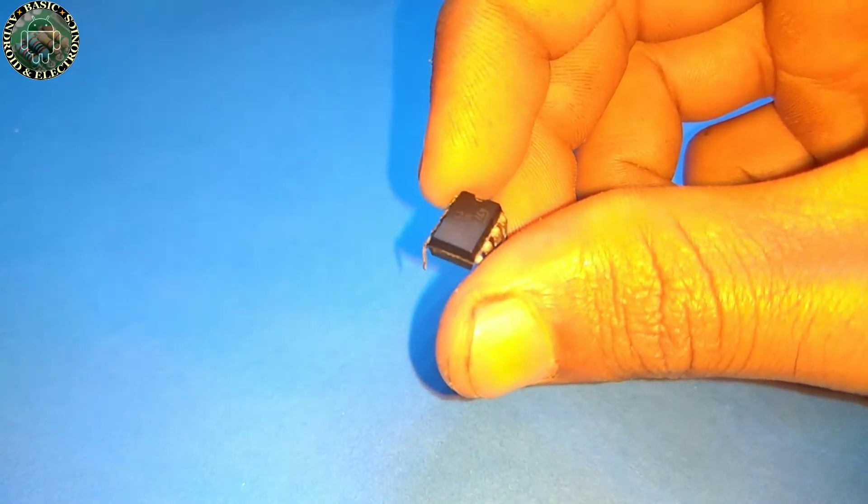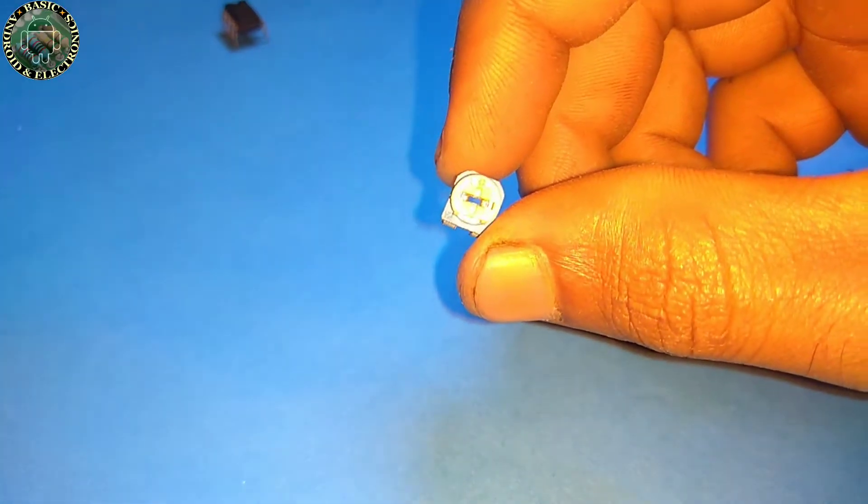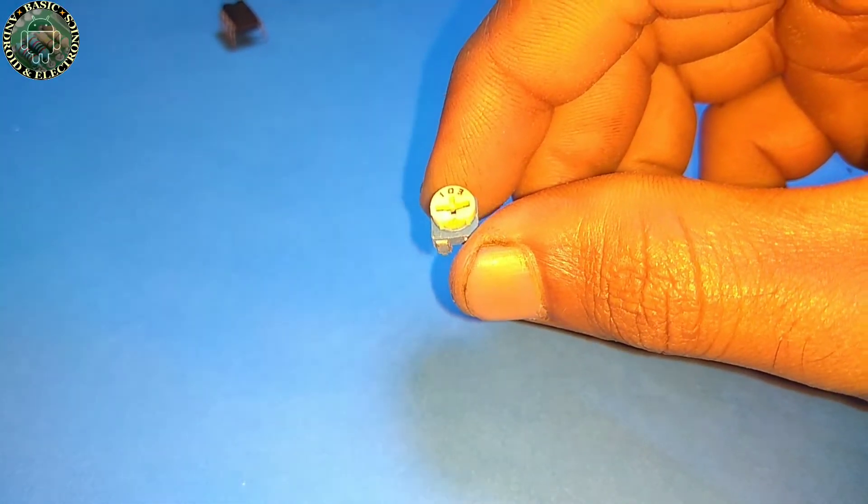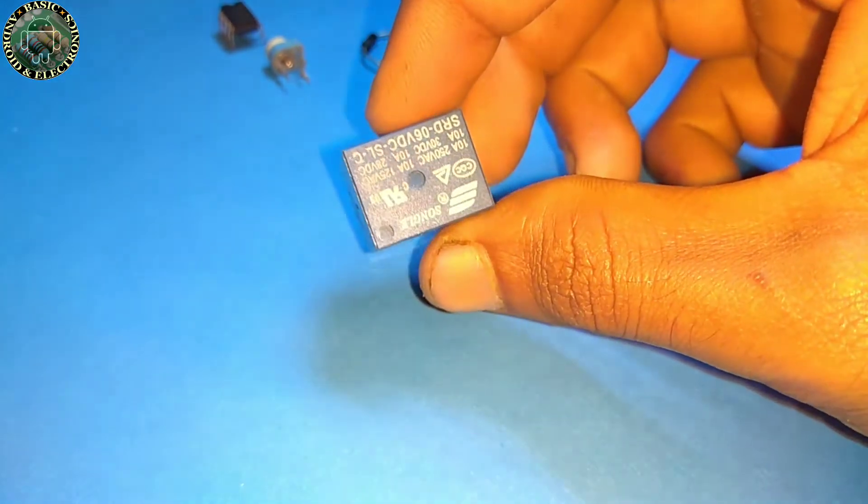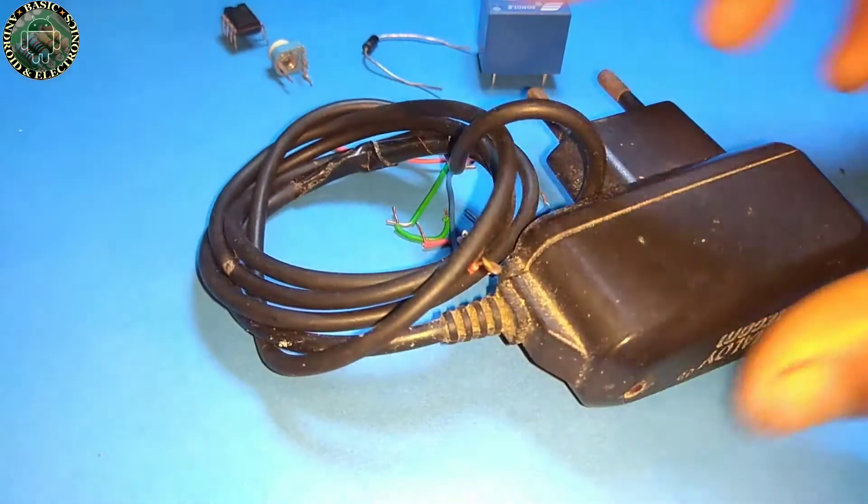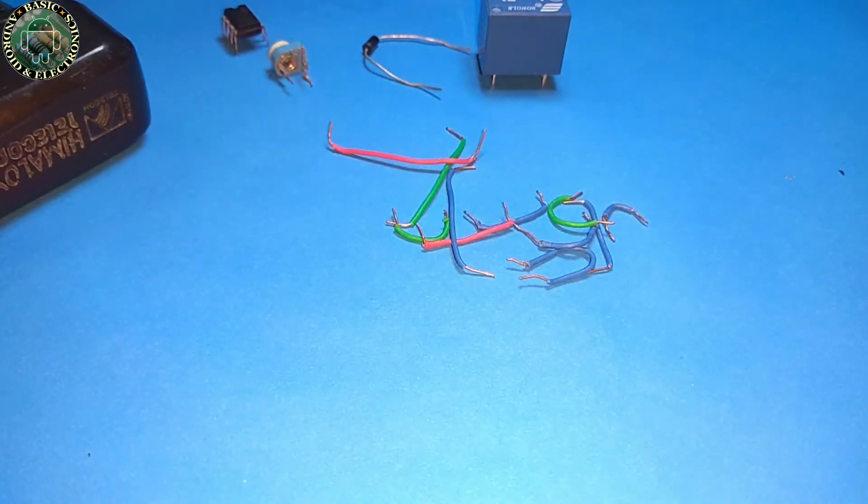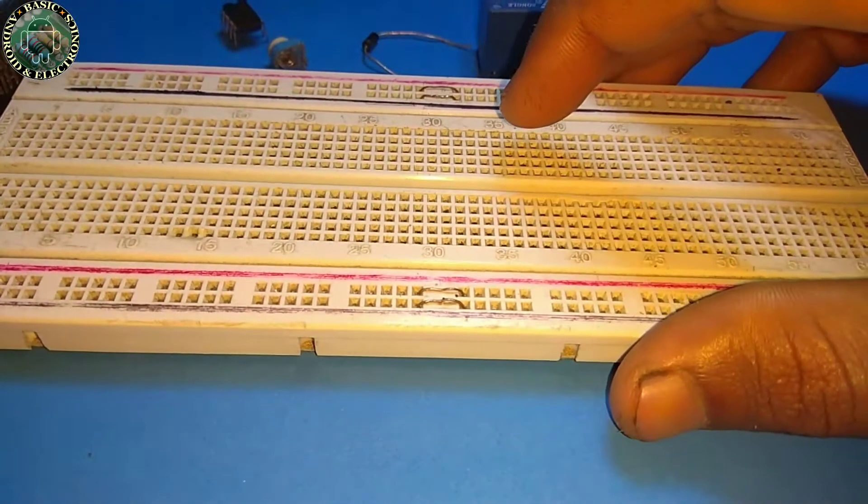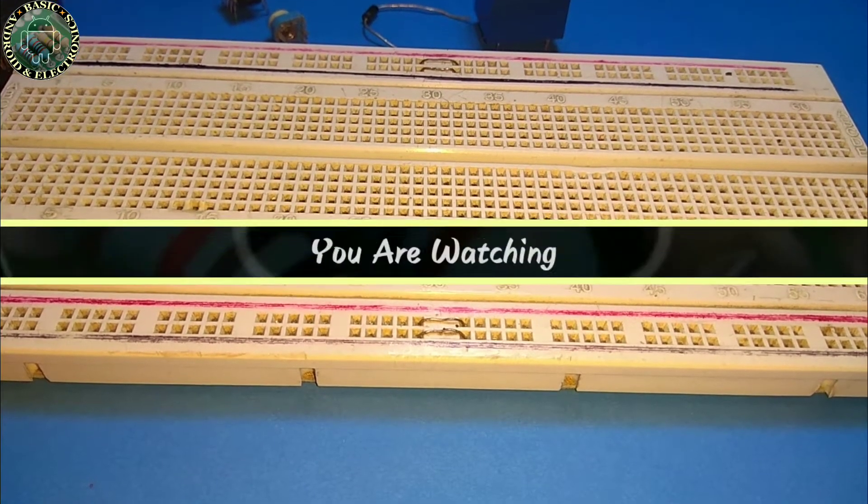So friends, if you want to make this project, you'll need a 555 timer IC, LDR, 10 kilo ohm variable resistor, 1N4007 diode, 5 or 6 volt relay switch, some wires, 5 volt power supply. I am using a 5 volt mobile phone charger and a breadboard. If you want to use 12 volt power supply, you need a 12 volt relay switch.